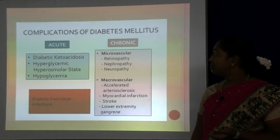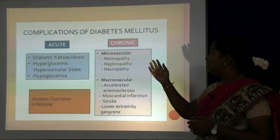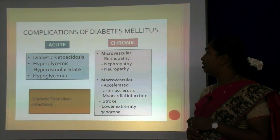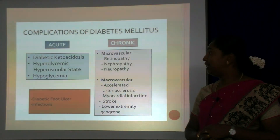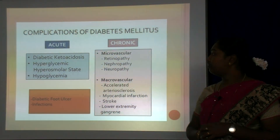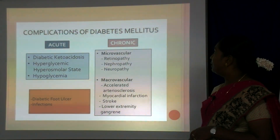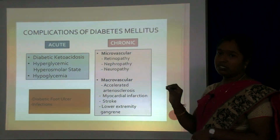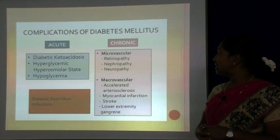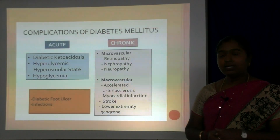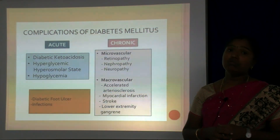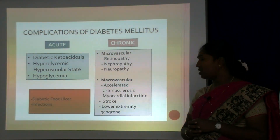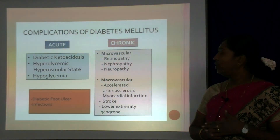The complications of diabetes are acute and chronic. Acute complications include diabetic ketoacidosis, hyperglycemia, hyperosmolar state — an imbalance of fluid balance — hypoglycemia, and diabetic foot infection. Chronic microvascular complications include retinopathy causing eye damage, nephropathy — kidney damage — and neuropathy — inactivation of neurons. Macrovascular complications are associated with heart disease, including accelerated atherosclerosis, myocardial infarction, stroke and lower extremity gangrene.